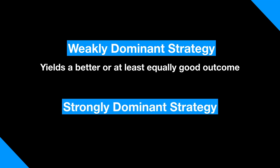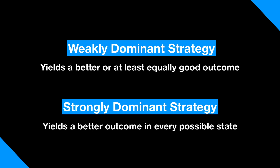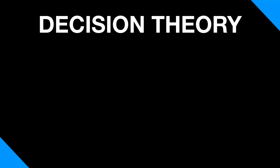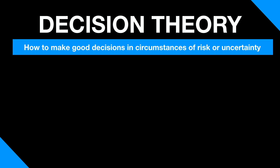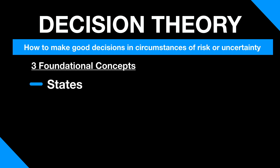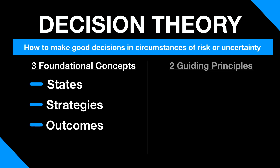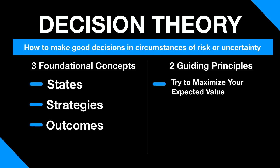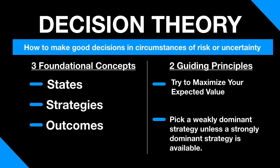A weakly dominant strategy yields a better or at least equally good outcome. In decision theory, always pick the weakly dominant strategy — unless, of course, there's a strongly dominant strategy. A strongly dominant strategy yields a better outcome in every possible state. So, we've seen that decision theory is all about how to make good decisions in circumstances of risk or uncertainty. There are three foundational concepts — states, strategies, and outcomes — and two guiding principles: try to maximize your expected value, and pick a weakly dominant strategy unless a strongly dominant strategy is available. With this crash course in decision theory behind us, you're now ready to apply these principles to this updated version of Pascal's argument that we'll discuss in the next video. See you then.